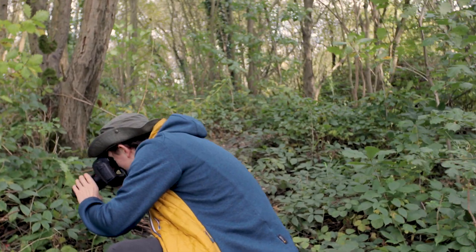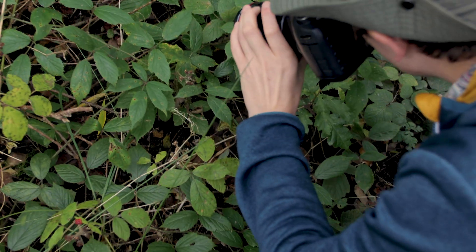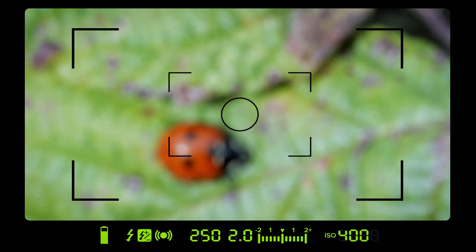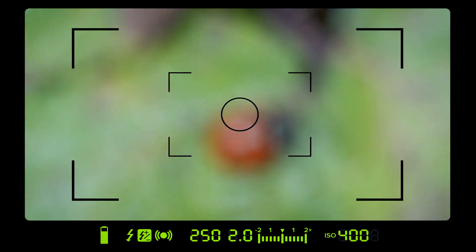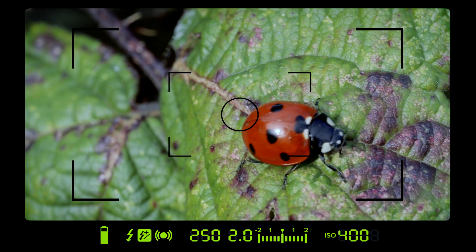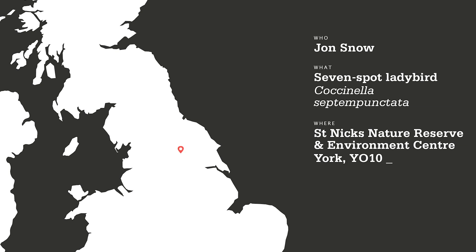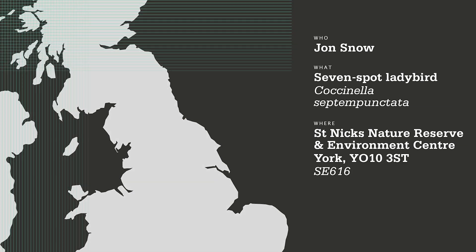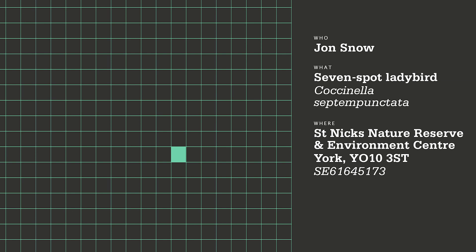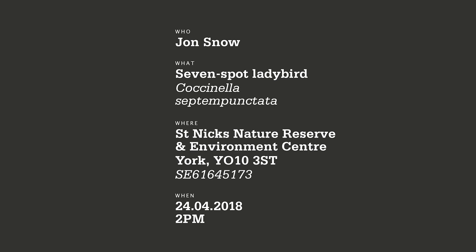It's helpful if the record contains the highest resolution of information possible — the more detailed the better. For instance, a record saying 'John spotted a beetle in York in 2018' is not going to be that useful. A higher resolution version would be: 'John Snow found a seven-spot ladybird at Saint Nick's Nature Reserve in York, grid reference SE 61645173, on April 24th 2018 at 2pm.' This is much more useful.